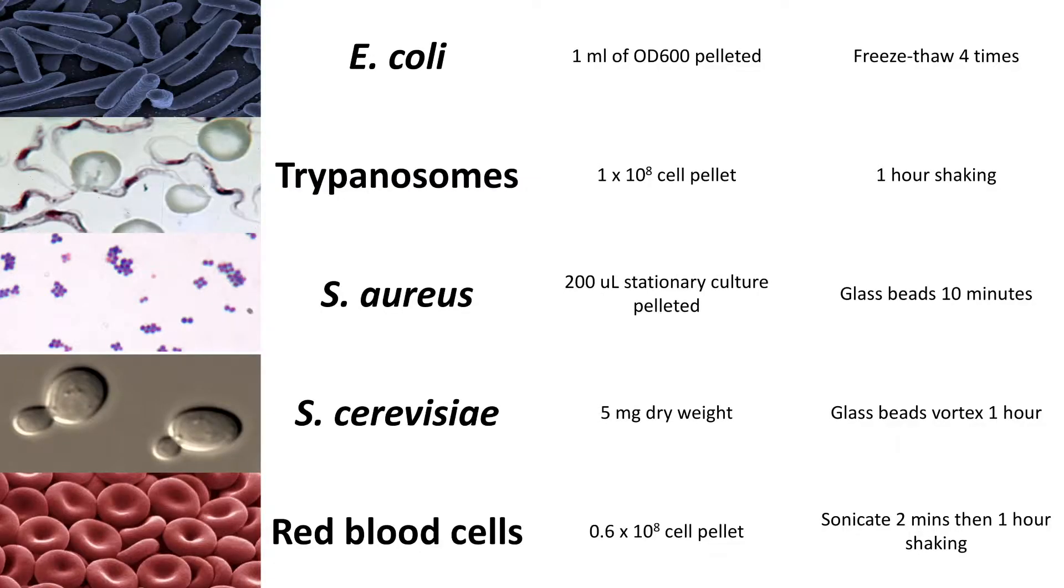At Glasgow Polyomics, we've worked with a number of different cell types and can help you determine how much material you're likely to need. Here are some examples of cell numbers required for common cell types.